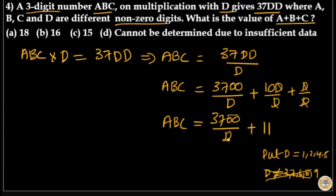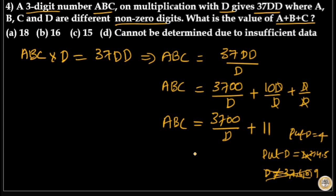If you put D as 1, then 3700 divided by 1 equals 3700 — a four-digit number. And 3700 divided by 2 is also a four-digit number. So D equals 1 and D equals 2 are not possible. Therefore, I will put the value of D as 4.